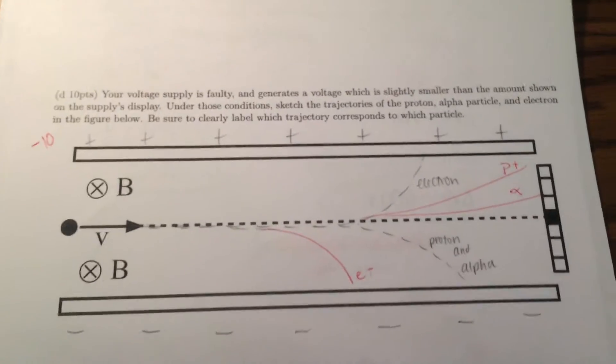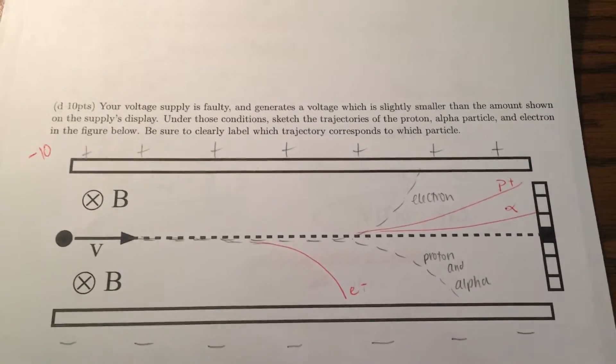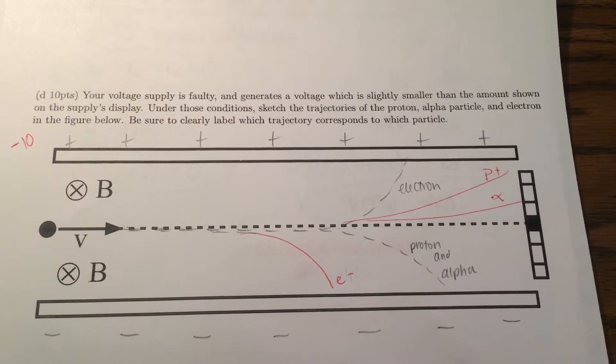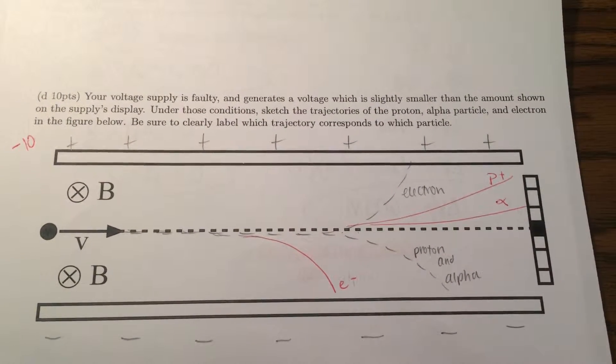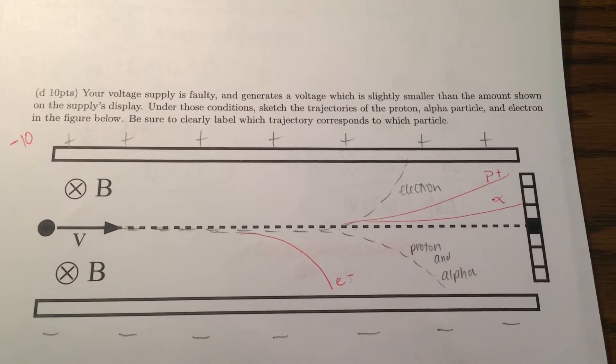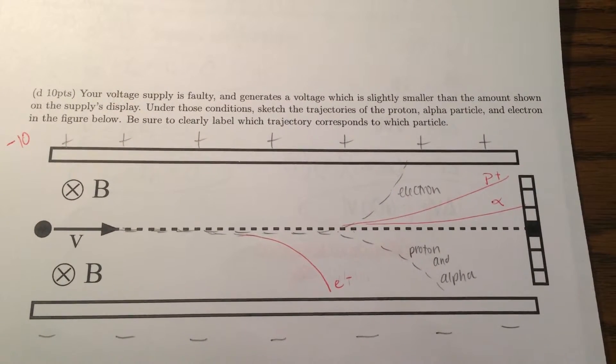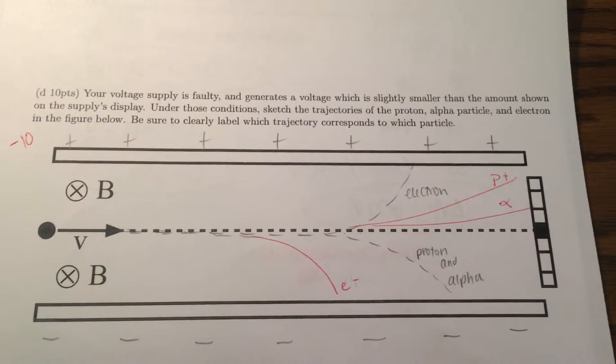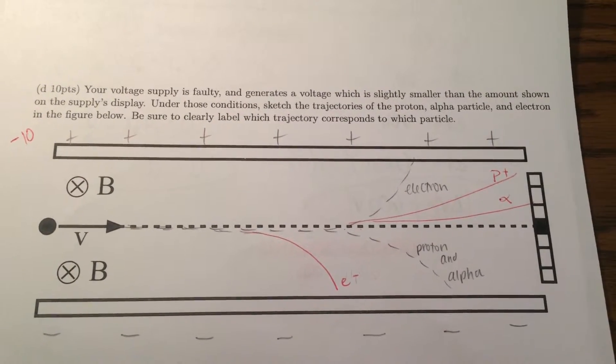But for the last question, which I got wrong, your voltage supply is faulty and generates a voltage which is slightly smaller than the amount shown on the supply's display. Under those conditions, sketch the trajectories of the proton, alpha particle, and electron in the figure below. Be sure to label which trajectory corresponds to which particle.